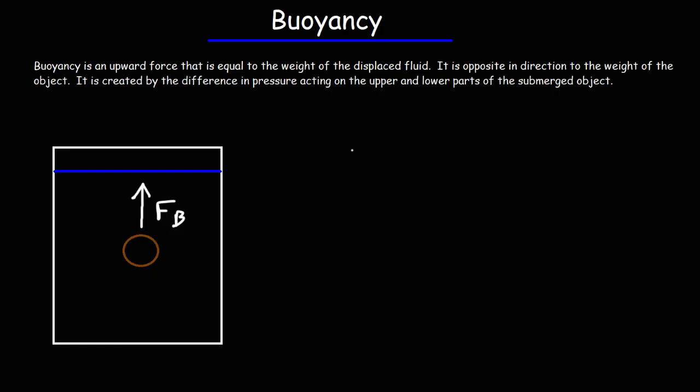The buoyant force is equal to the weight of the displaced fluid, and so it's equal to the density of the fluid times the volume of the submerged object times the gravitational acceleration.